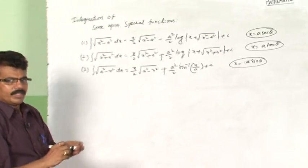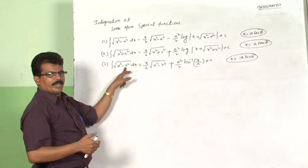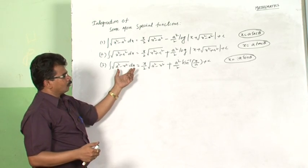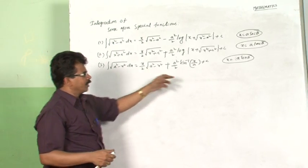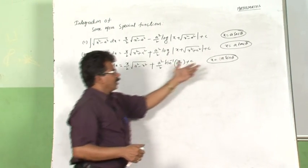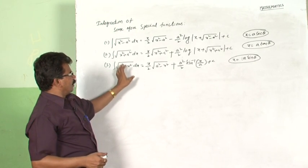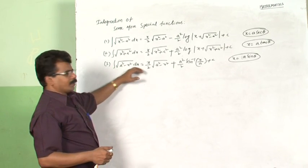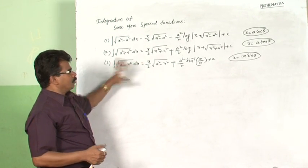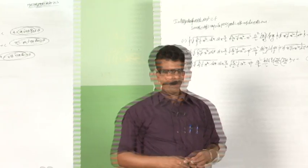You can remember easily because 1 minus sin square is cos square. So the suitable form is x equal to a sin theta. Substituting this and simplifying, you will get the answer for this function. Now let us see some problems of this form.